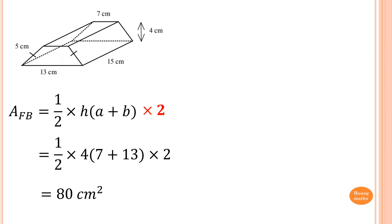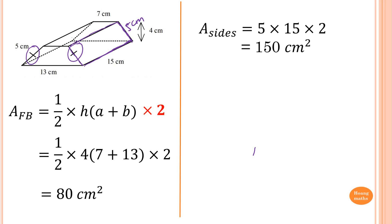To work out the area of the sides, the length is 15 and the width is 5 cm — the tick marks show both sides are equal. The area of the left and right is 15 times 5, times 2, which gives me 150 square centimeters.